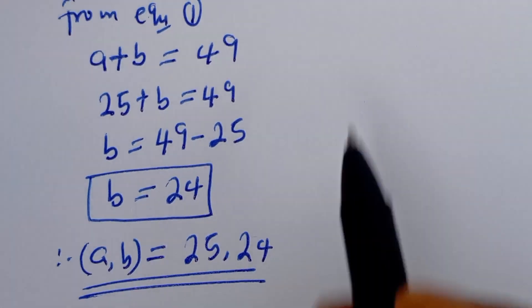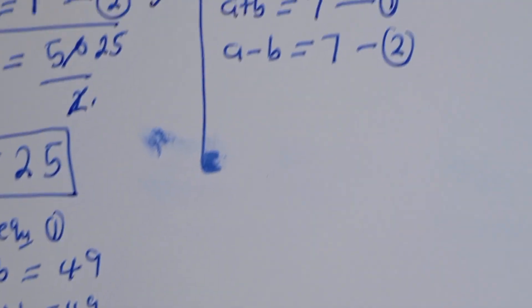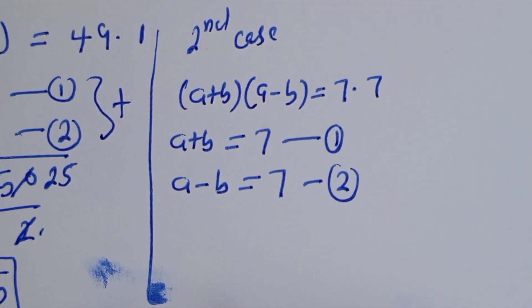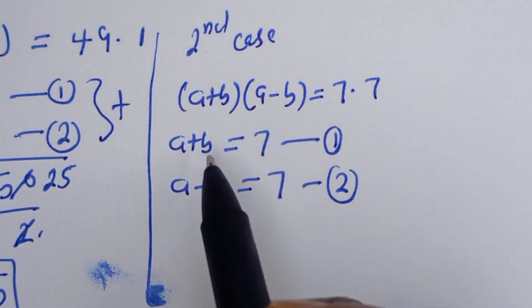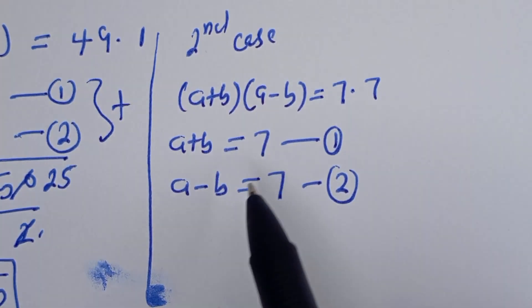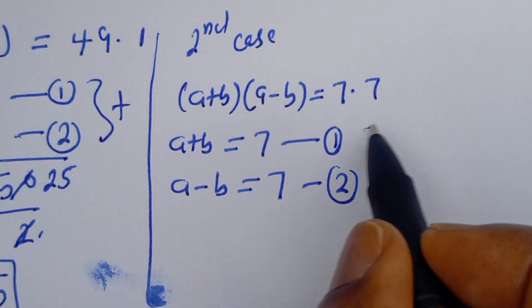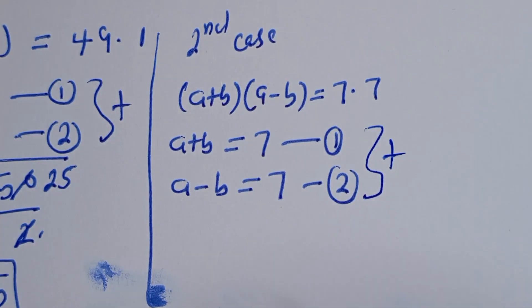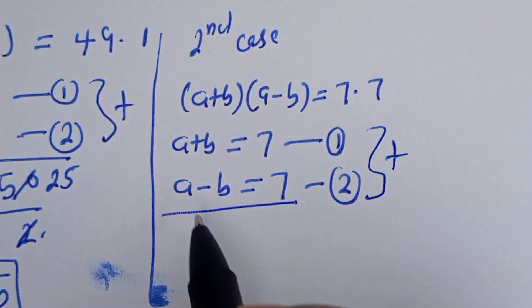Now let's consider the second case. From the second case, we have A plus B is equal to 7, and A minus B is equal to 7. Let's also solve it simultaneously using the elimination method.